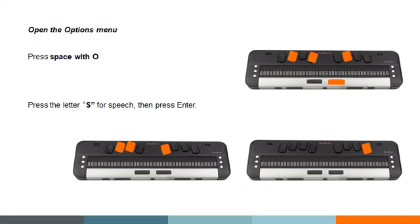I'm going to open the options menu by pressing O with Space to come into our options menu. The first option here is user settings, and I have a new item called speech settings. To quickly get there I'm going to press the letter S as in speech, then press Enter or a cursor router key to open it up.